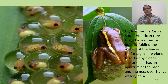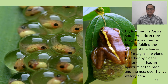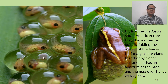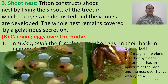This is Phyllomedusa — it has glued its eggs to leaves using its cloacal secretion. The egg mass remains attached, and when the larvae emerge, they drop gradually into the water below.